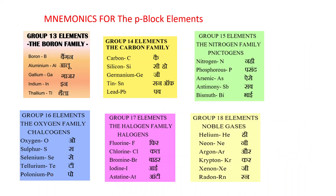Now let's see how to memorize P-block elements using mnemonics. For group 13 elements — boron (B), aluminium (Al), gallium (Ga), indium (In), thallium (Tl) — the mnemonic is: 'Bangan Alu Gkar In Thala' → B, Al, Ga, In, Tl. For group 14 — carbon (C), silicon (Si), germanium (Ge), tin (Sn), lead (Pb) — the mnemonic is: 'Cassie ho Ge, son of Pub' → C, Si, Ge, Sn, Pb.